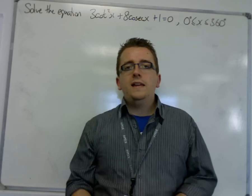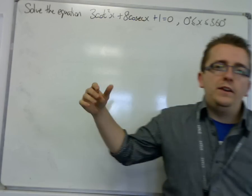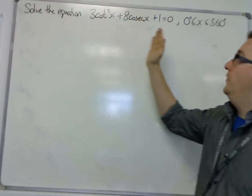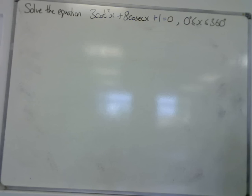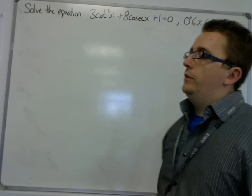We're looking at solving a trigonometric equation. In this one we have 3cot²x + 8cosecx + 1 = 0, and we're solving between 0 and 360 degrees.